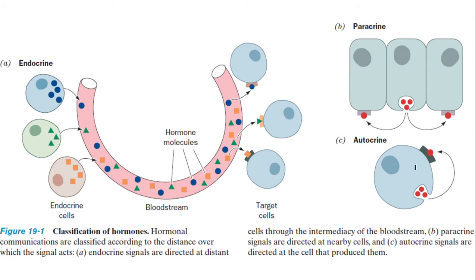What about autocrine signals? A cell produces a messenger, which is released into the extracellular fluid, and from there the messenger binds with a receptor on the surface of the same cell that produced it. This is the autocrine signaling system.